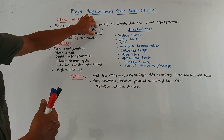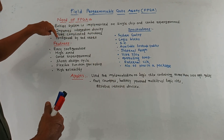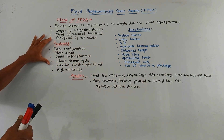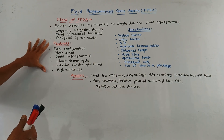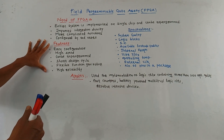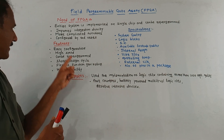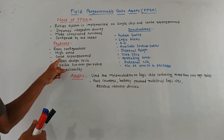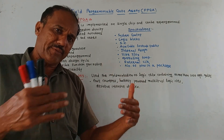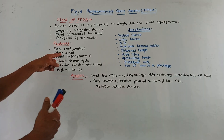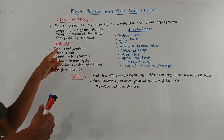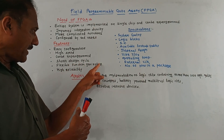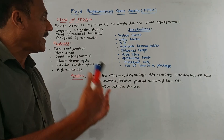FPGA can handle more complicated functions and it can be configured by end users. Now we will discuss the features of FPGA. Major features are: easy configurations, high speed, it can be reprogrammed — as per the requirement we can change the programming. The design cycle is short, it consists of a flexible function generator, and it has high reliability.